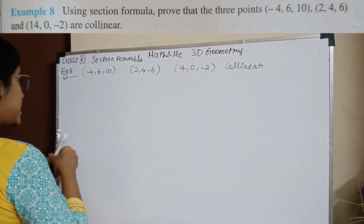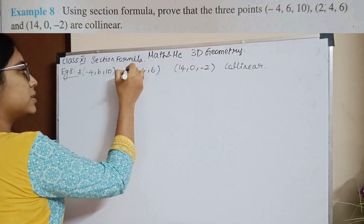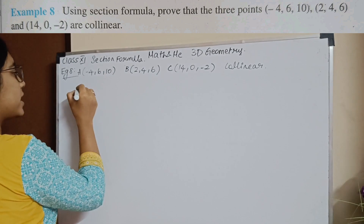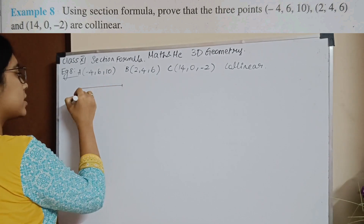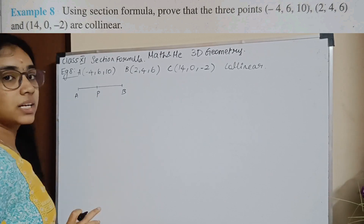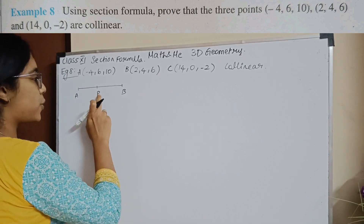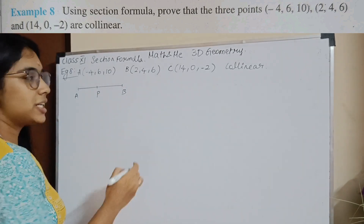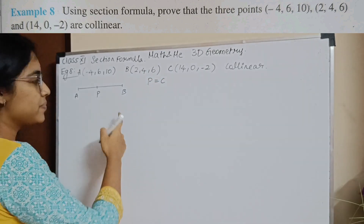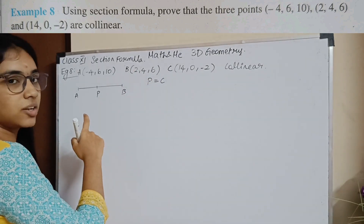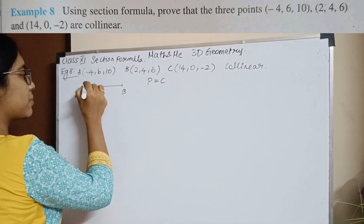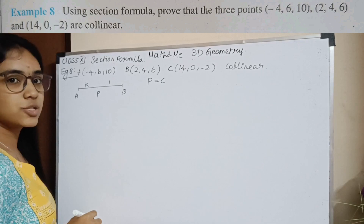So, what will you do? You have the points A, B, and C. What I am going to do is take a point P which lies between A and B. At point P, I am going to see if this point P coincides with point C. If point P equals point C, they are collinear. So, point P divides the line segment AB in the ratio K is to 1.